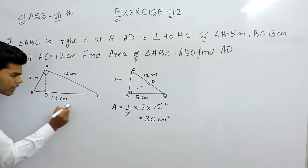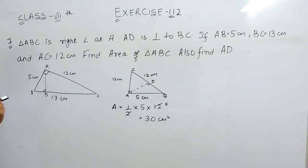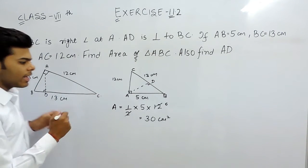If we take the base to be this 13 cm then the corresponding height will be AD. So area is 30 and we have to find out AD, and area we know.